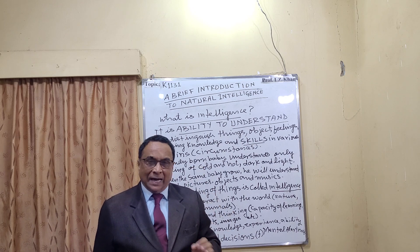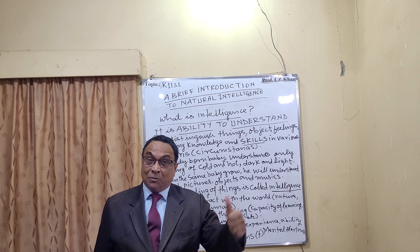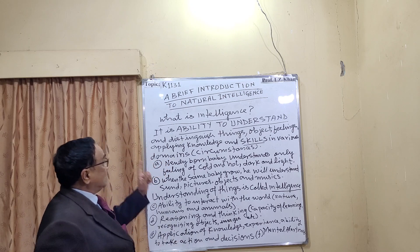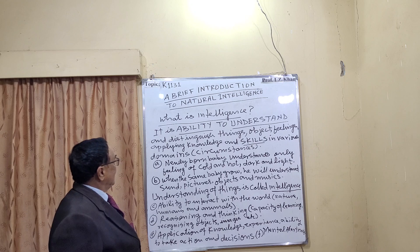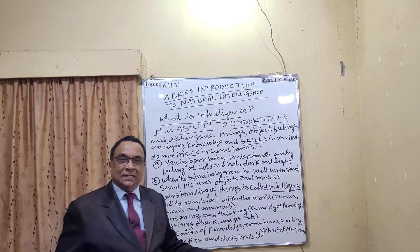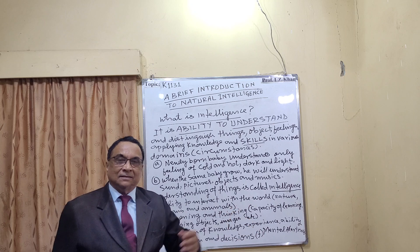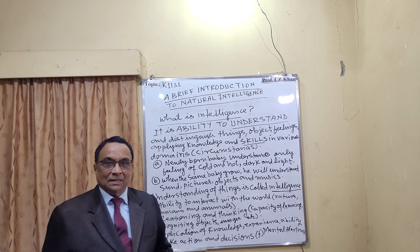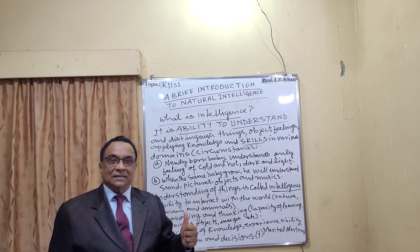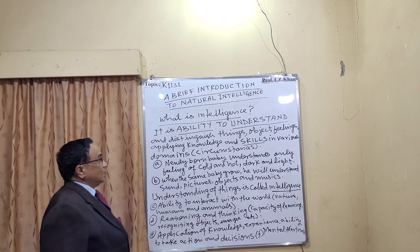Intelligence is the ability of human beings and even animals to understand situations and circumstances. It is the ability to understand and distinguish things — objects, feelings — and to apply knowledge and skills. Somebody with very good skill in music or singing is intelligent in that domain. Somebody applying skill in science discovery is intelligent in scientific knowledge. Skill is part of your intelligence in various domains.